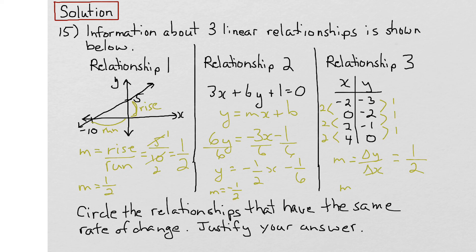And m in relationship 3 is given by positive 1 over 2. We can see that the relationships with the same rate of change would be this one and this one.